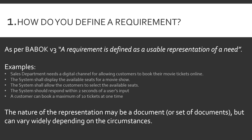For example: the sales department needs a digital channel for allowing customers to book their movie tickets online; the system shall display the available seats for a movie show; the system shall allow customers to select the available seats; a system should respond within two seconds of a user's input; and a customer can book a maximum of 10 tickets at one time. These are all different types of requirements we'll be covering shortly.